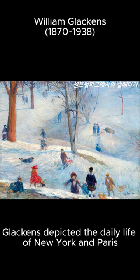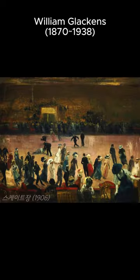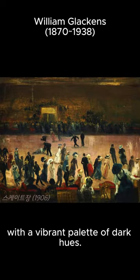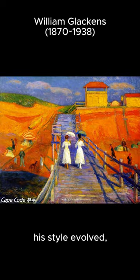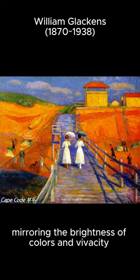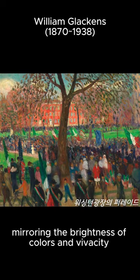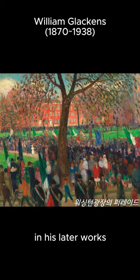Initially, Glackens depicted the daily life of New York and Paris with a vibrant palette of dark hues. However, influenced by Renoir, his style evolved, mirroring the brightness of colors and vivacity in his later works.